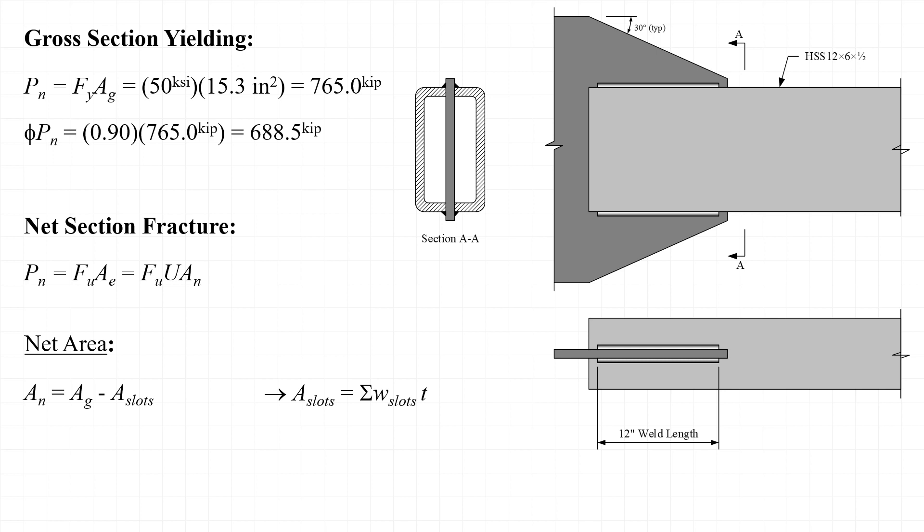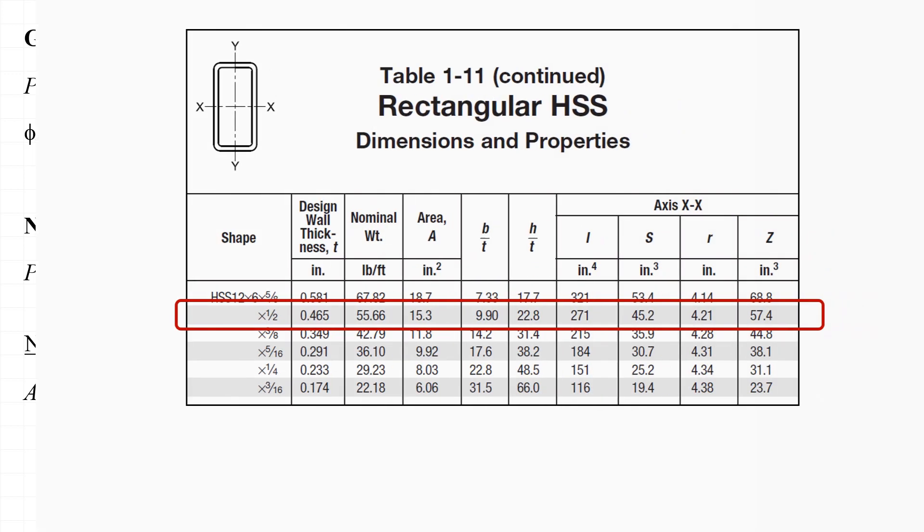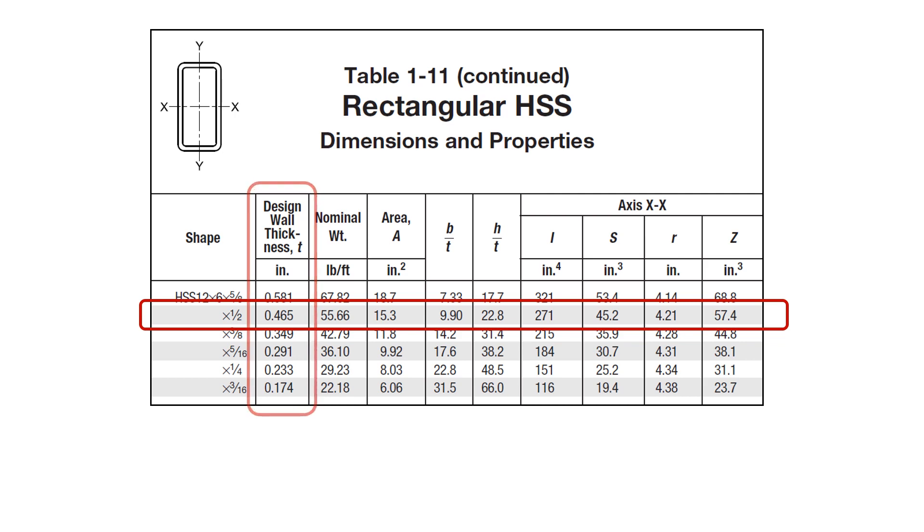Looking first at the net area, we take the net area A sub n as the gross area, minus the area that's lost when the slots are fabricated in the end of the member for the gusset. So we take the area of the slots as the width of the slots times the wall thickness of the tube. We'll return to table 1-11 of the manual, where we find that the design wall thickness of the tube is 0.465 inches. Remember that the design wall thickness of an HSS is smaller than the nominal thickness of an HSS. The design wall thickness of a tube is taken as 93% of the nominal thickness.